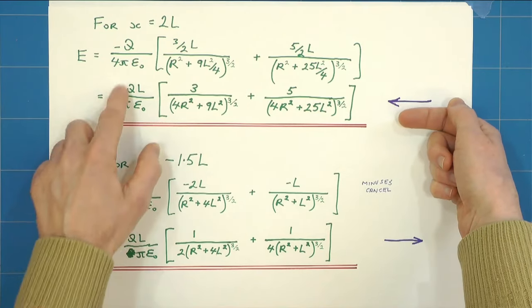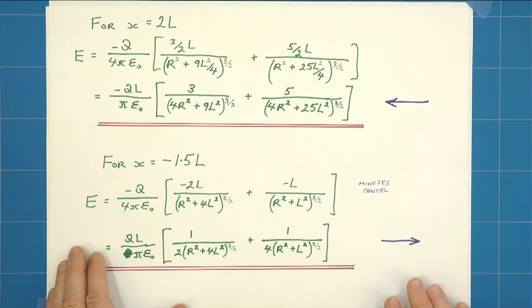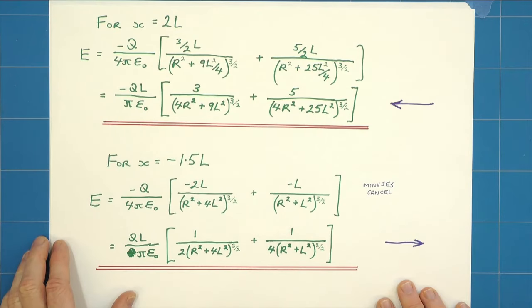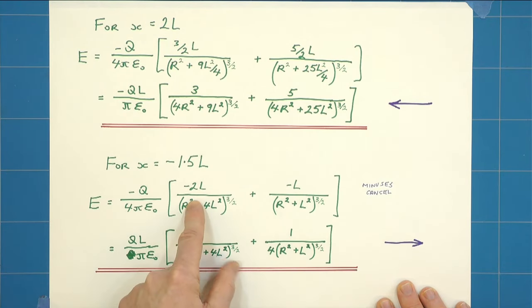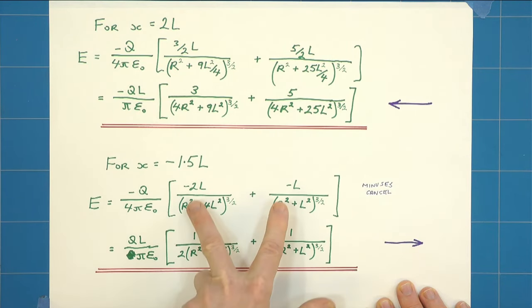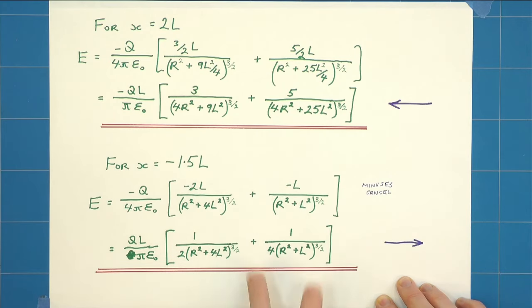For x equals minus 1.5 L, same thing again. But this time when we substitute in, we get obviously the minus here for the minus q charges, and we get a couple of minuses because we're now to the left of the x origin. So the minuses cancel each other out and we get left with this expression.